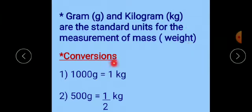Now conversions: 1000 gram is equal to 1 kilogram, and 500 gram is equal to - it is read as 1 upon 2 or half - half kilogram. 500 gram is equal to half kilogram.